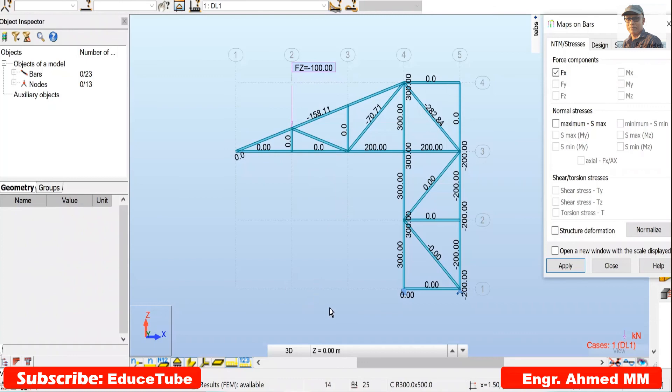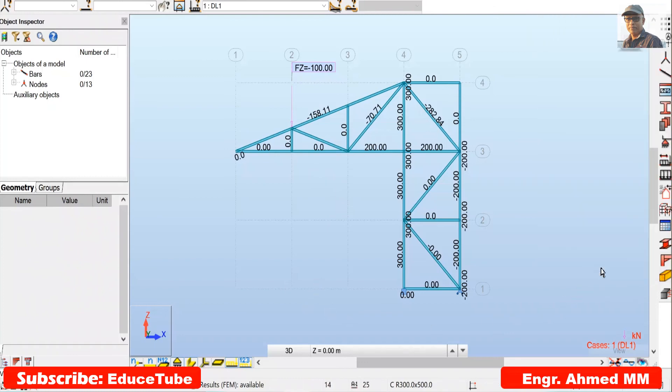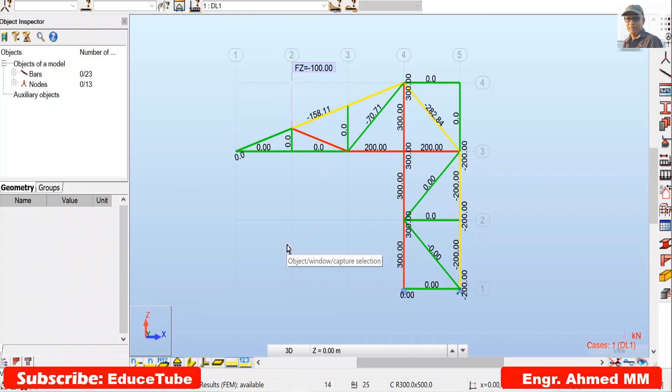I can put some color on it. You see all zero force members here: these two here, this one, this one, and this. Through software also we got the same results. That's all for this truss.